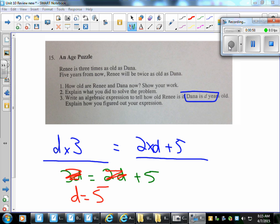So that means Dana is five years old. So if Dana is five, Renee is 15. Five years from now, Dana will be 10, and Renee will be 20.